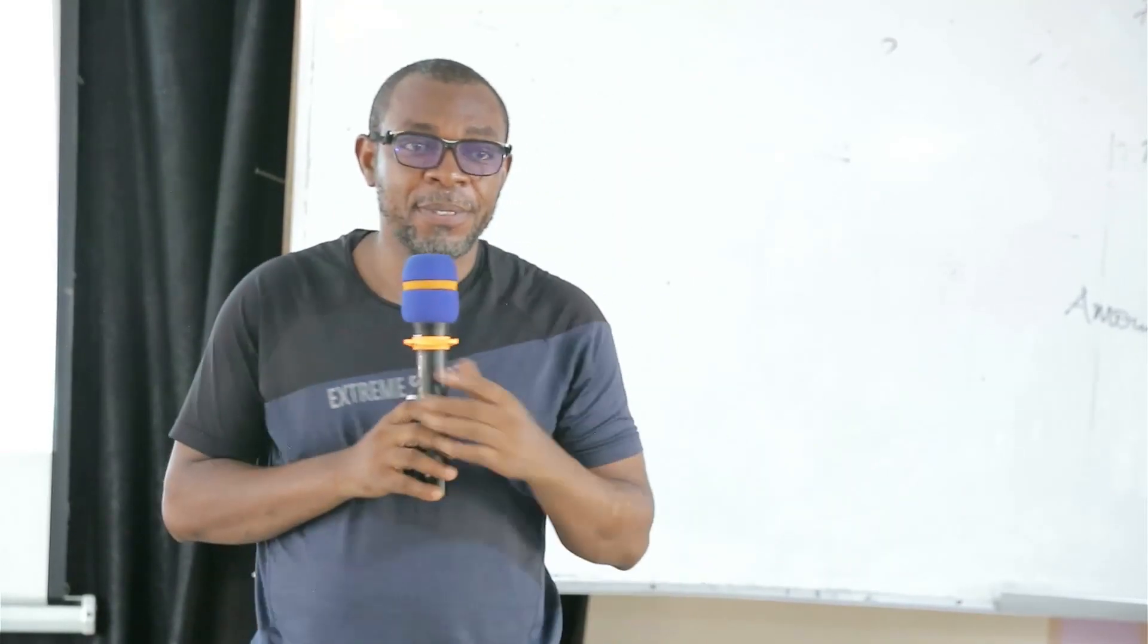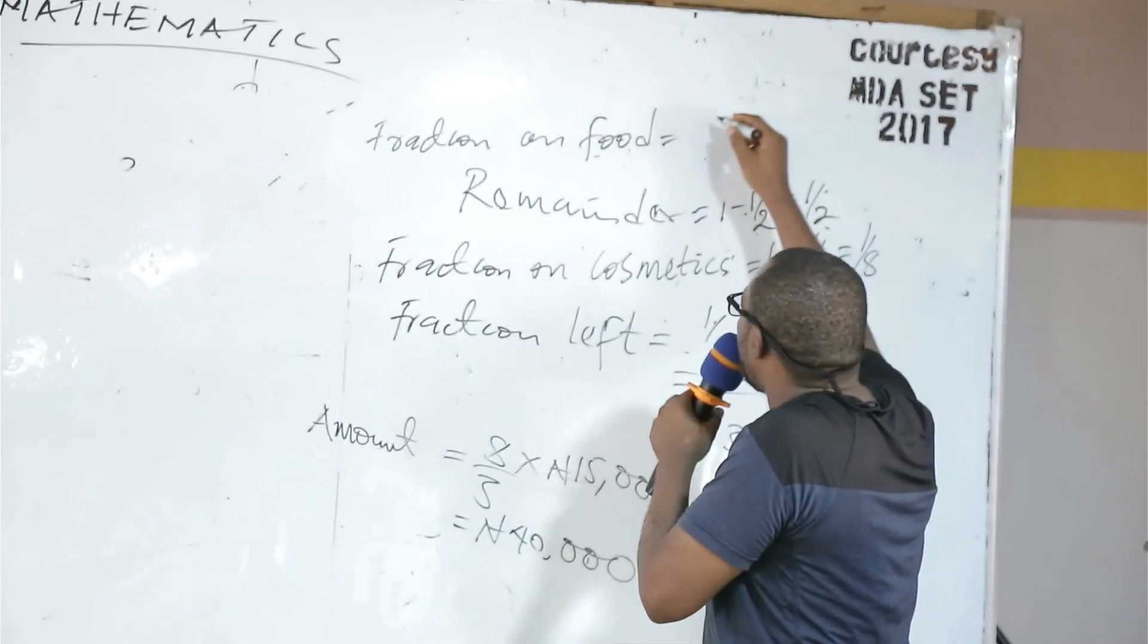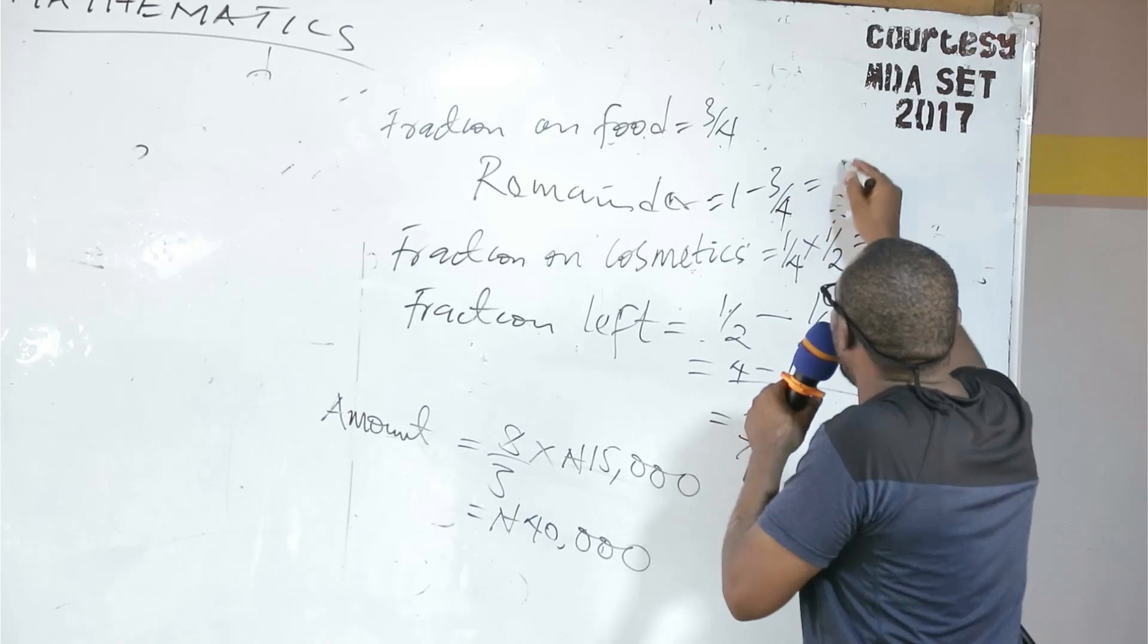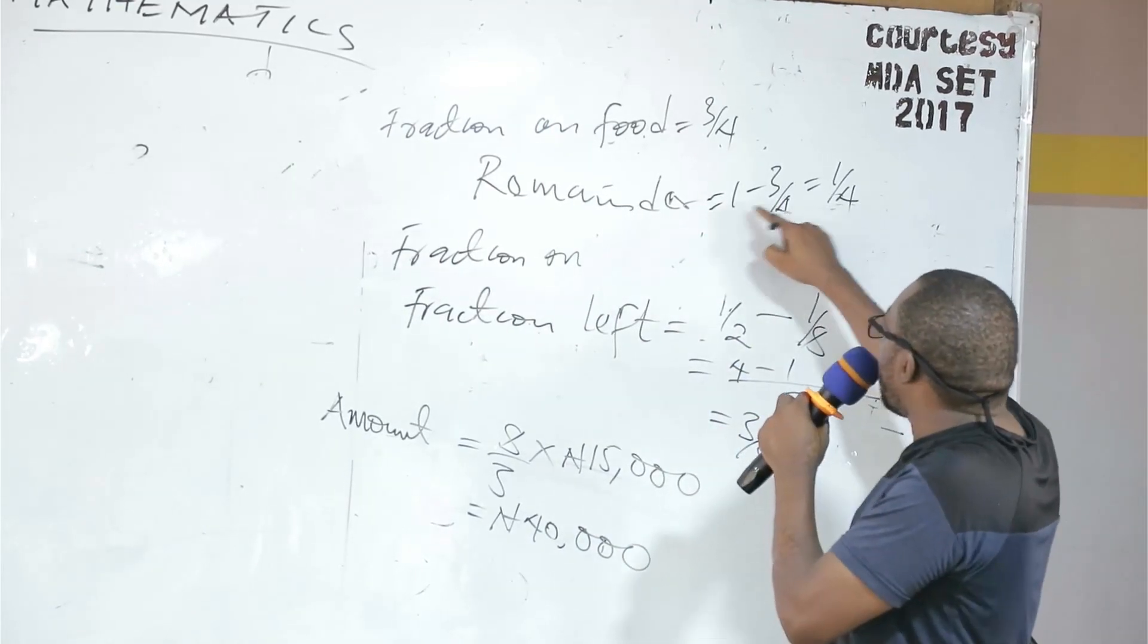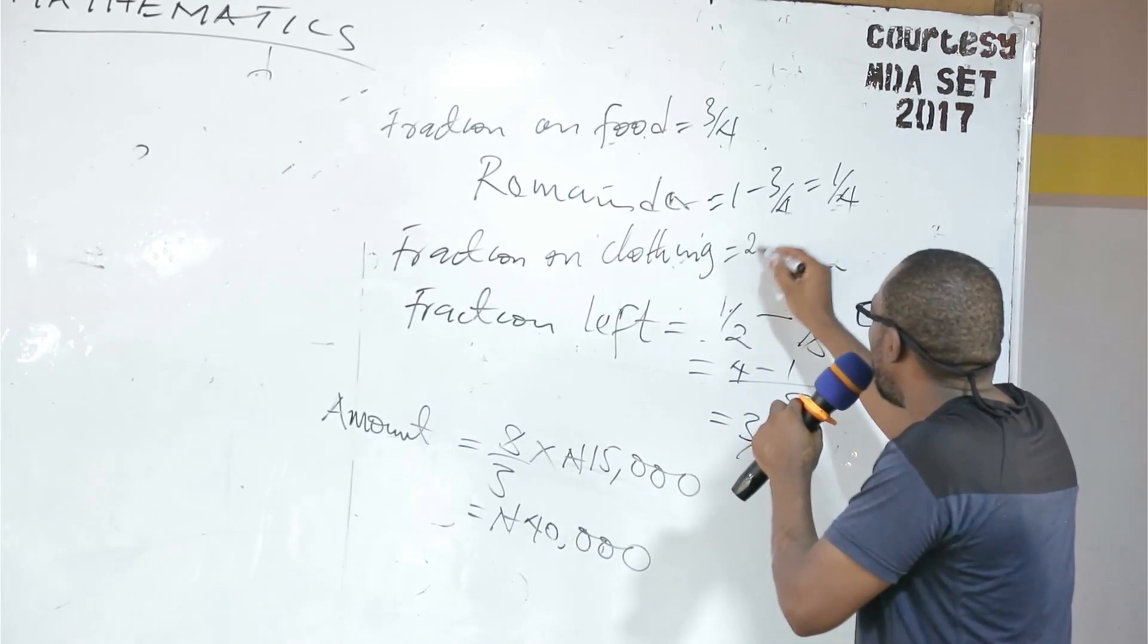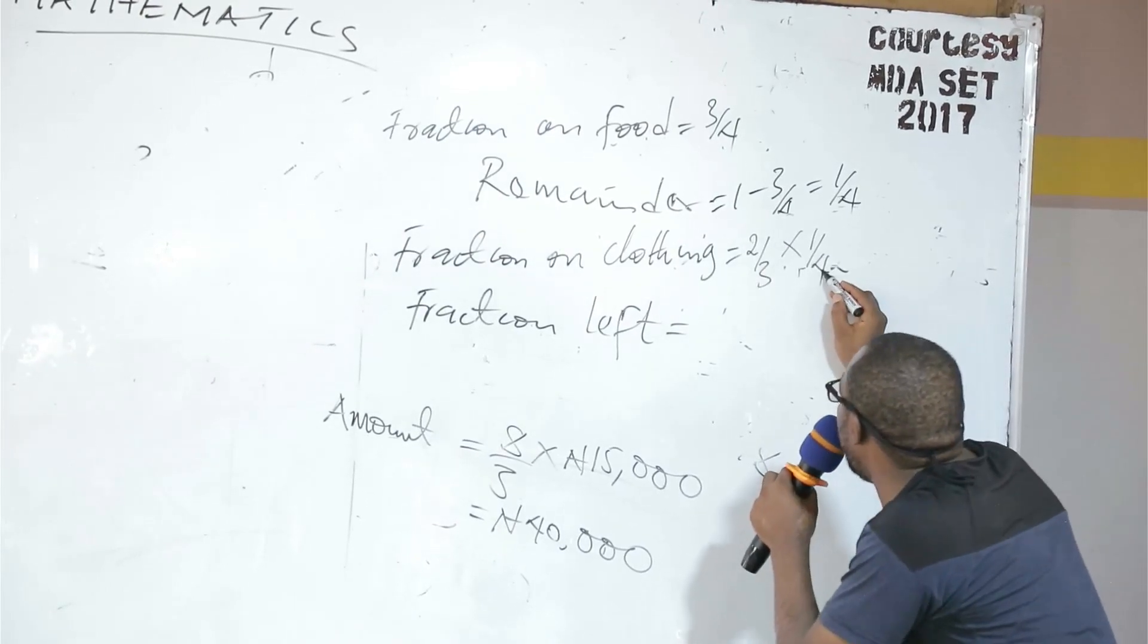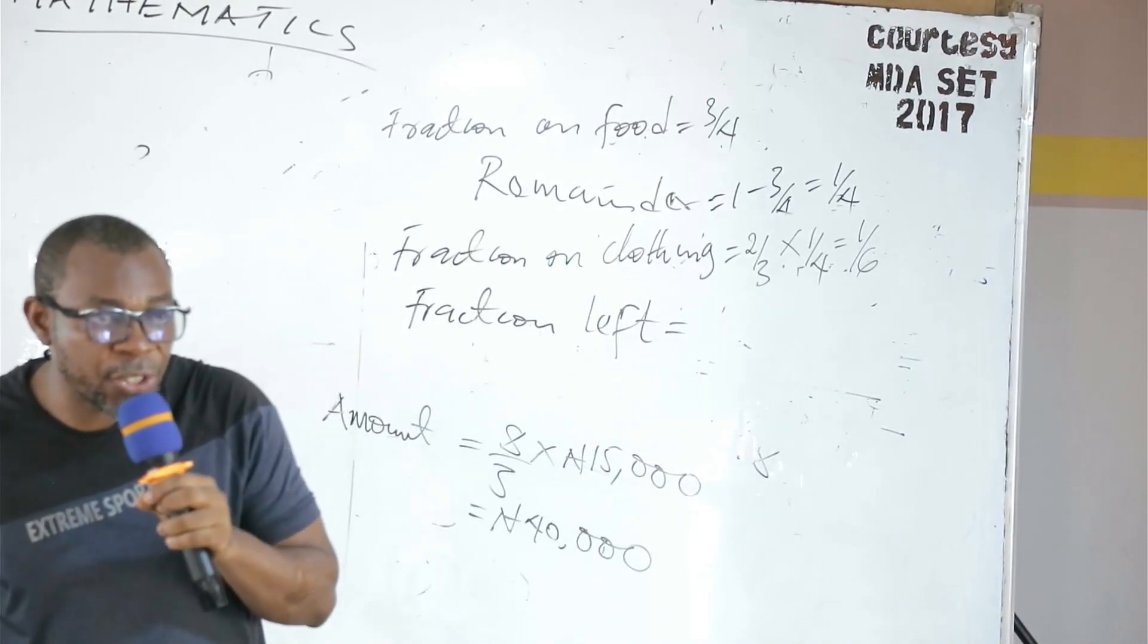Remember I asked her, can I go down? Fraction on food. What was the fraction of food? Three over four. So remember, one minus three over four, which is one over four. The fraction on clothing. What is the fraction of clothing? Two over three of one over four, which is one over six.